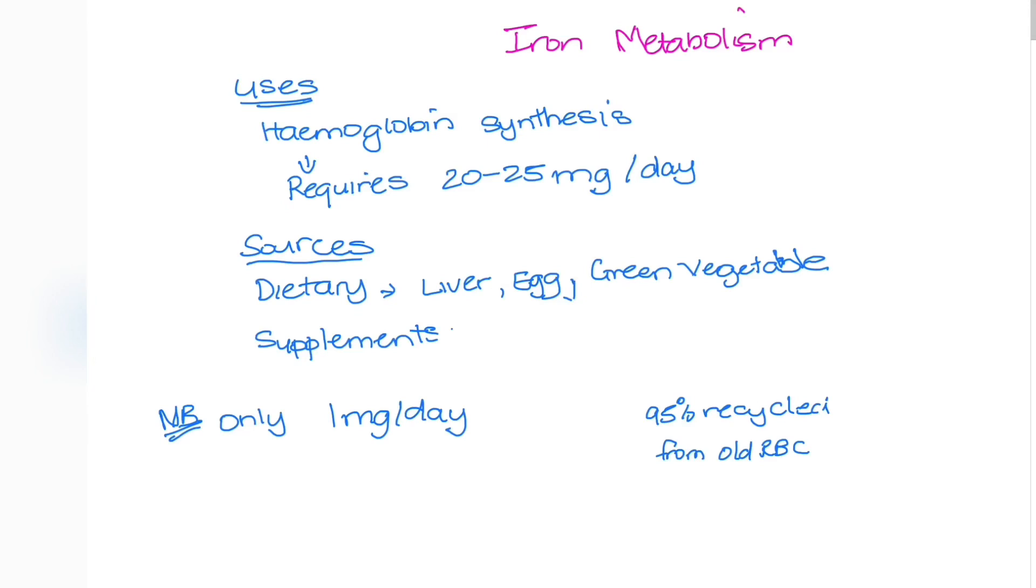Iron is a very important element. It is used in hemoglobin synthesis, and hemoglobin is an important part of erythropoiesis, which is involved in making our red blood cells. We require about 20 to 25 milligrams per day for erythropoiesis to be normal.